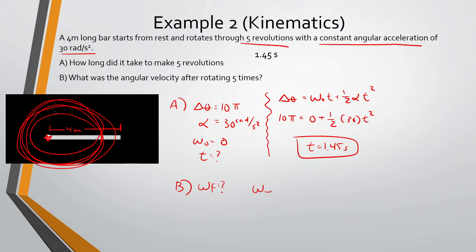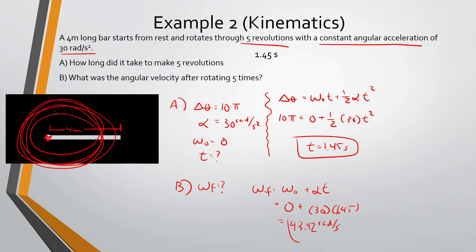Omega-final equals zero plus 30 times 1.45, which gives us 43.42 radians per second. Again, it's the same thing as linear — now things are just rotating. Try not to overcomplicate it.